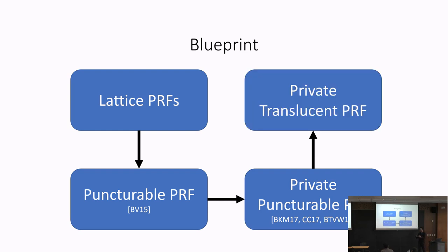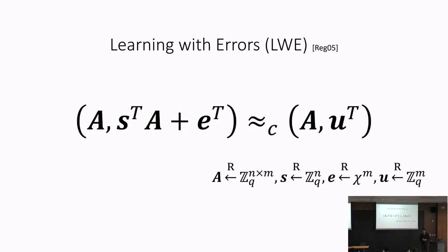The key lattice assumption is the learning with errors (LWE) assumption, a classic assumption of lattice-based cryptography. It says: given a uniform random matrix A and a noisy linear combination of the rows of A — where s defines the coefficients and there is additional small Gaussian noise — this noisy linear combination looks indistinguishable from a uniformly random vector.